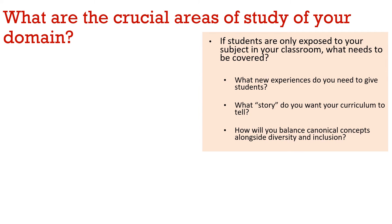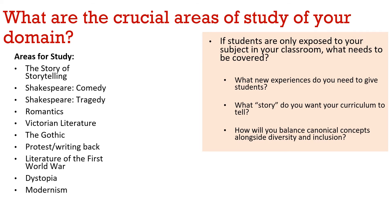Question two is: what are the crucial areas of study for your domain? At this point, you're thinking about the domain as a whole and seeing Key Stage 3 as that foundation. If students are only exposed to your subject in your classroom, what must be covered? What experiences do students need to have? What story do you want your curriculum to tell? How will you balance canonical concepts alongside diversity and inclusion? These were the things we felt a good Key Stage 3 curriculum must address. It's not to say we would have a whole term on the gothic, a whole term on dystopia — but we wanted to make sure we were including these, because if a curriculum is going to be as ambitious as we set it out to be, if it is going to expose students to diverse and canonical writers, these were the things we felt we needed to include.